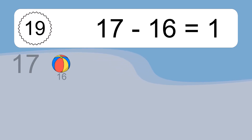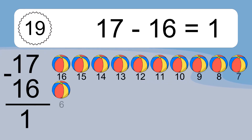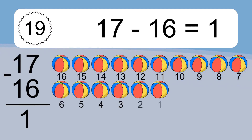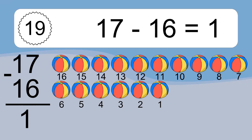17 minus 16 equals what? 17 minus 16 equals 1. Let's count it: 16, 15, 14, 13, 12, 11, 10, 9, 8, 7, 6, 5, 4, 3, 2, 1.